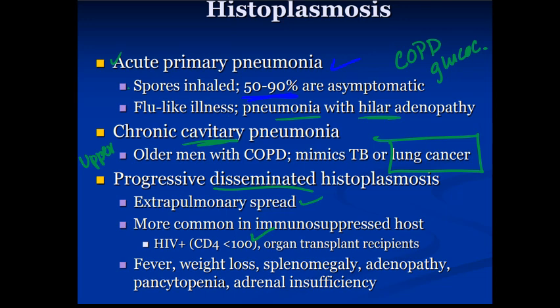Histoplasma can also penetrate the bone marrow, causing pancytopenia — which is bad news, because once it depletes cells there, you lose neutrophils, and it's the neutrophils that help keep it in check. Once a patient becomes neutropenic, that's obviously really bad. It also has the ability to infiltrate the adrenal glands, causing symptoms of adrenal insufficiency and in some cases even adrenal crisis.